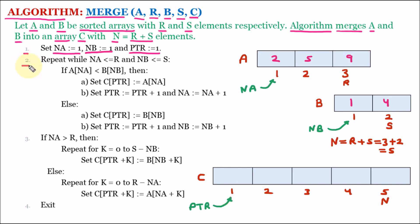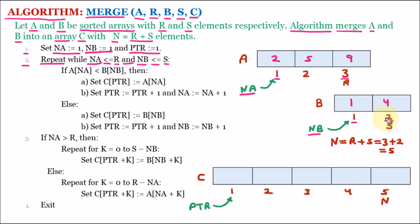In line 2, we repeat the statements while na is less than or equal to r. na is 1 and r is 3, so 1 ≤ 3 is true. We have AND, so both conditions must be true. The second condition is nb ≤ s. nb is 1 and s is 2, so 1 ≤ 2 is also true. Both conditions are true, so we proceed to the next line.